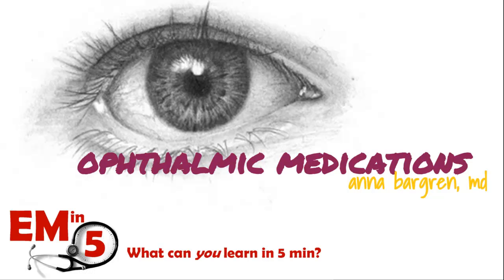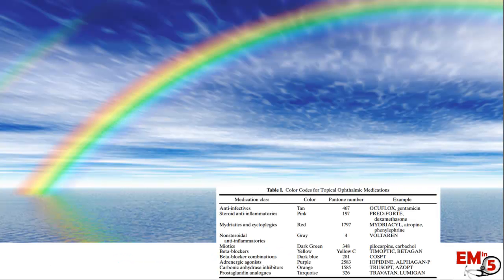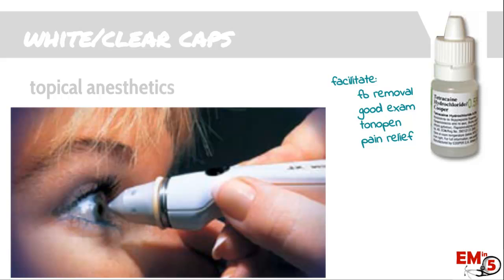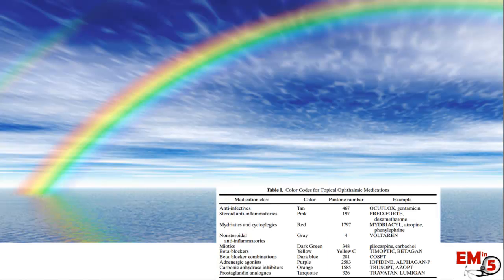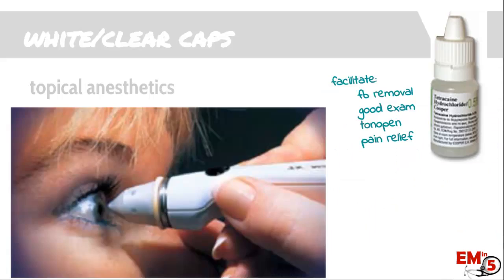For today's EMN5, we're going to talk about ophthalmic medications, specifically topical ones. There are a lot of different kinds of medications we can apply to the eye, and there was actually a coding system developed that color codes the different medication classes so that it's a little bit safer to apply these medications. We're going to go through each of these color schemes and talk about a couple of the ones we use most commonly.